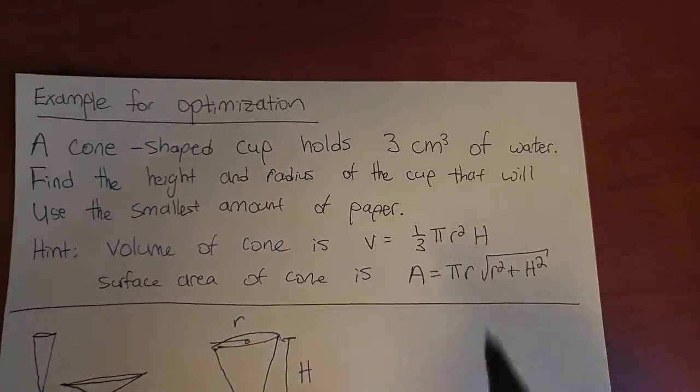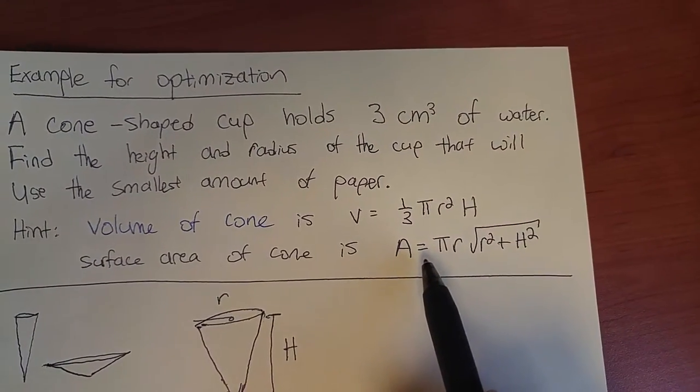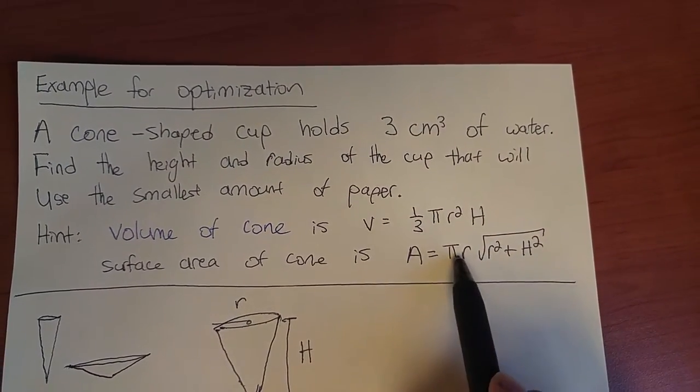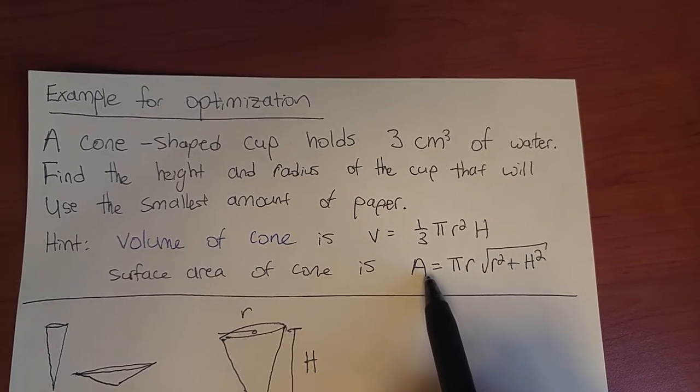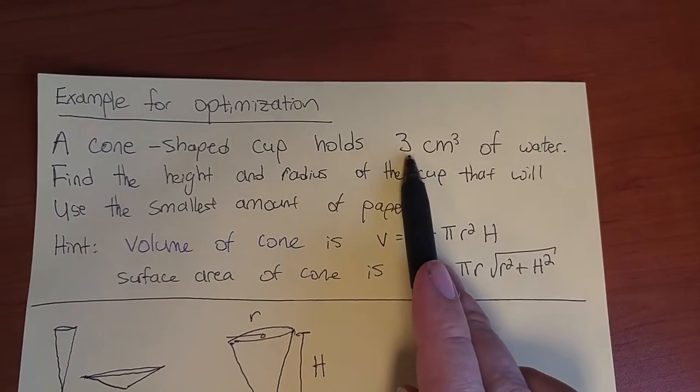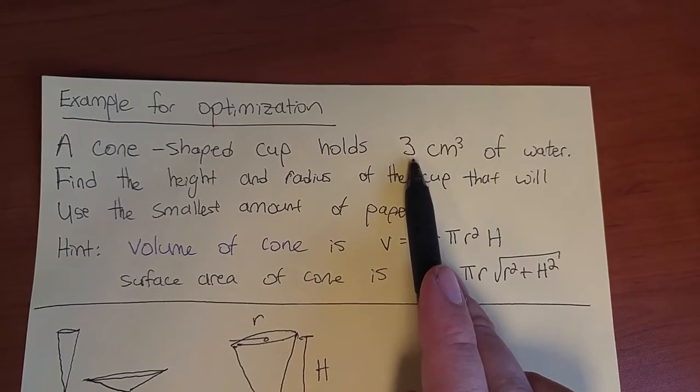What we want to do is make this equation as small as possible. Find the value of r and h that would minimize the surface area, while still giving us 3 cm³ of volume.